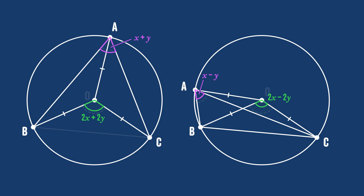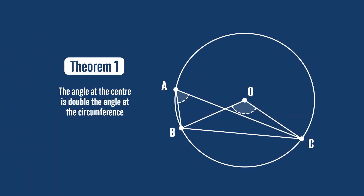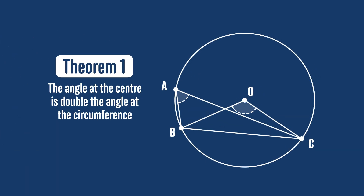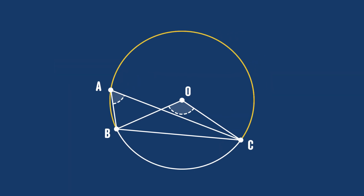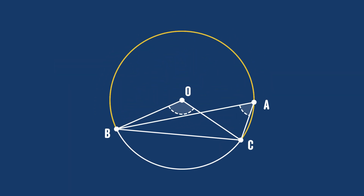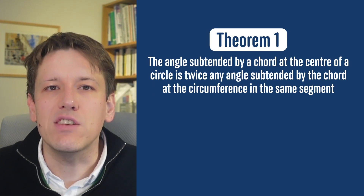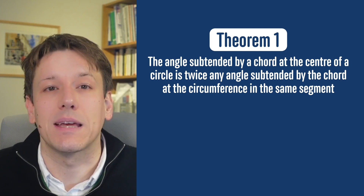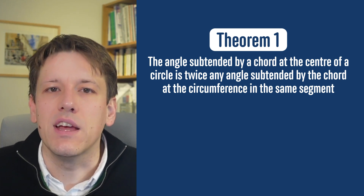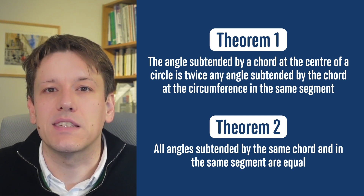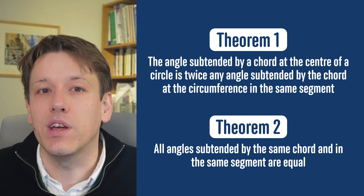We've followed almost precisely the same argument and now we really do know the theorem works in this case as well — we just work with X minus Y instead of X plus Y to deal with the different location of A. So we've got our first circle theorem: if the angle at the circumference is X, then the angle at the centre is 2X, but only when A is any point on the major arc BC. Precisely: the angle subtended by a chord at the centre is double any angle subtended by that chord at the circumference in the same segment. This also gives us for free the theorem that any angles in the same segment subtended by the same chord are all equal, since they all equal half of that same angle at the centre.